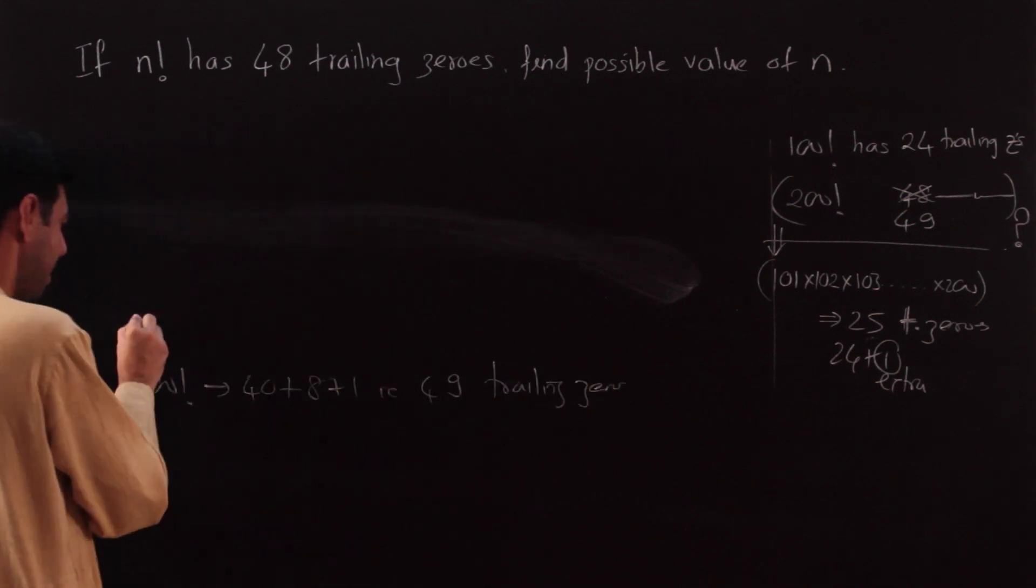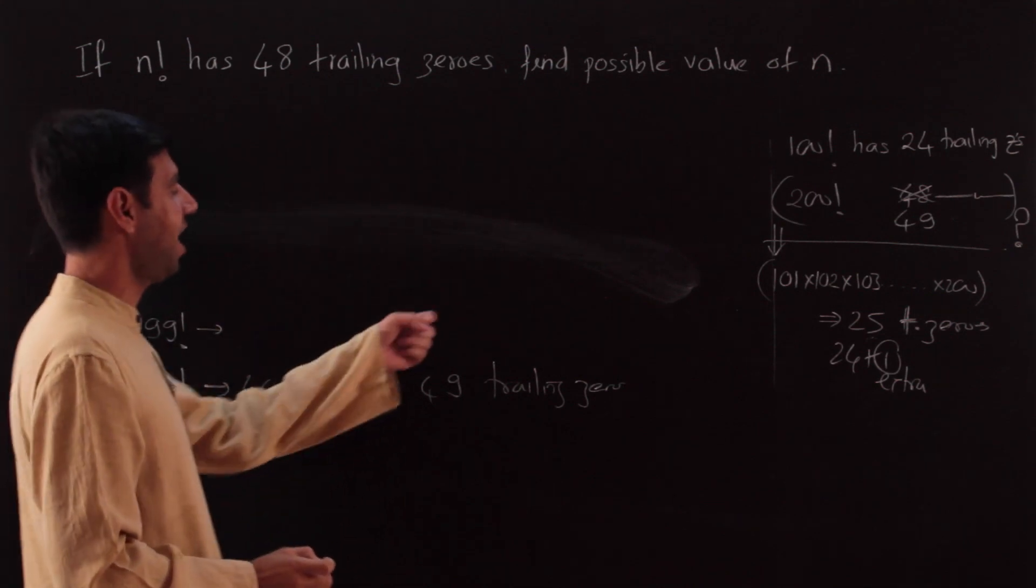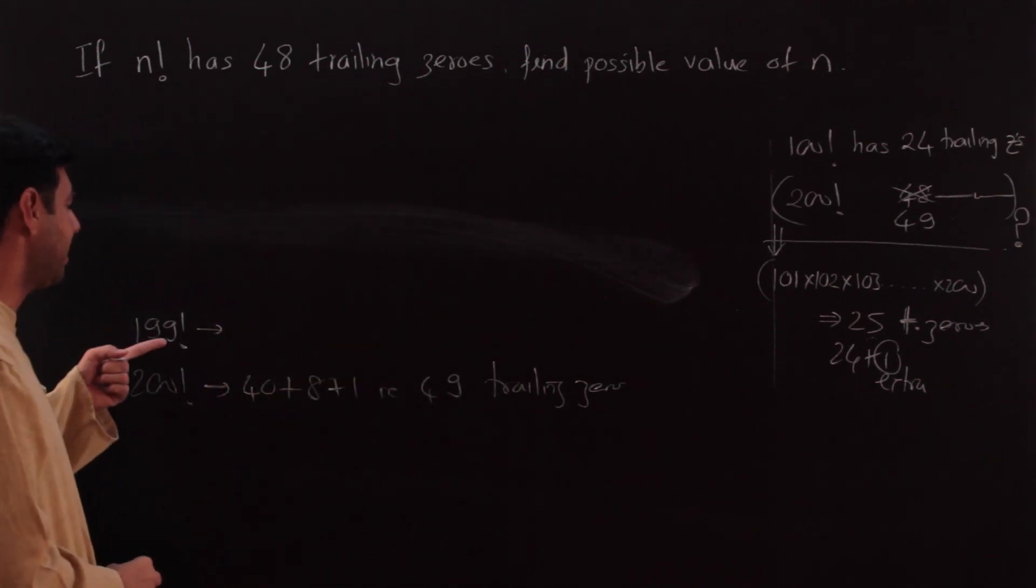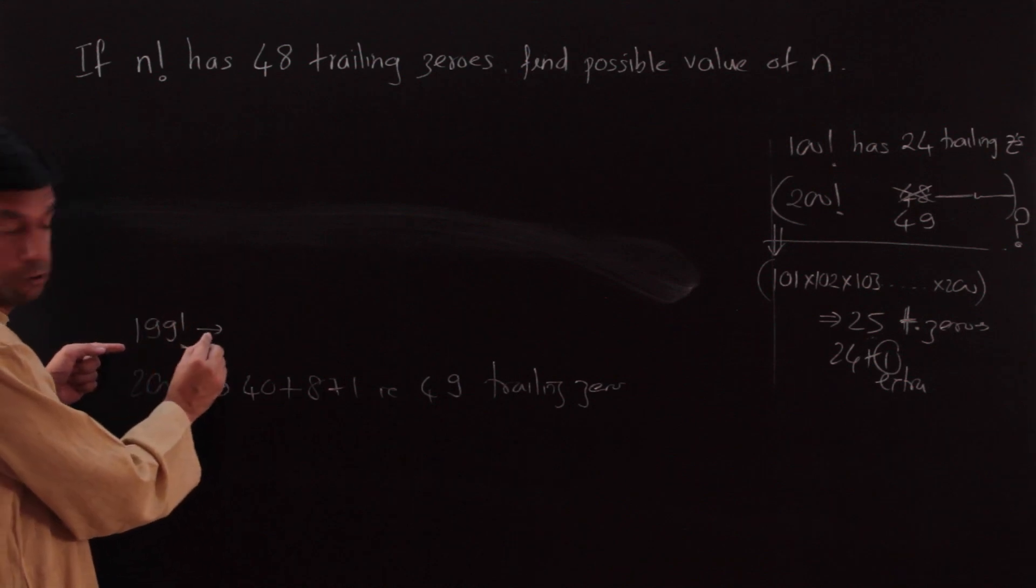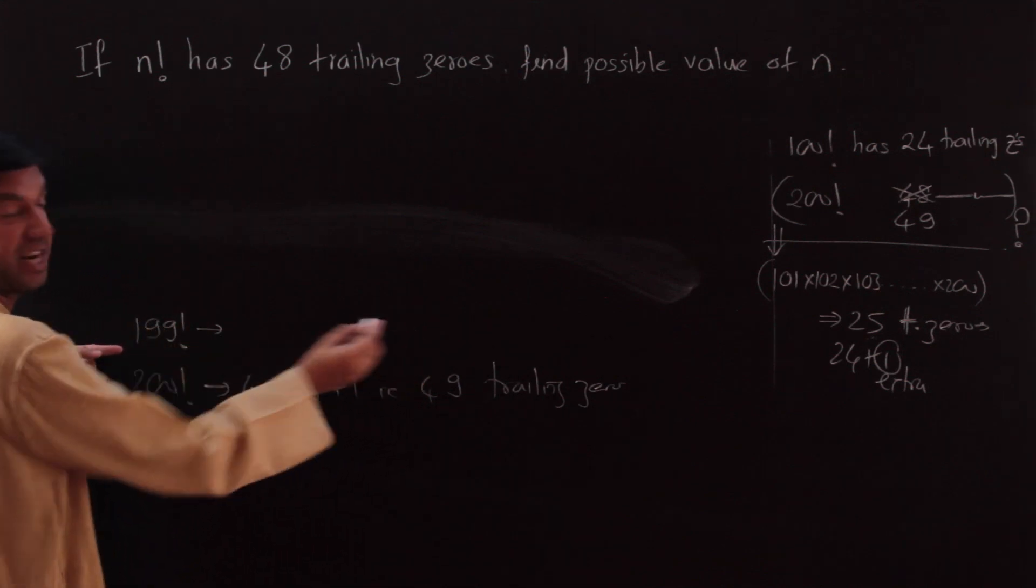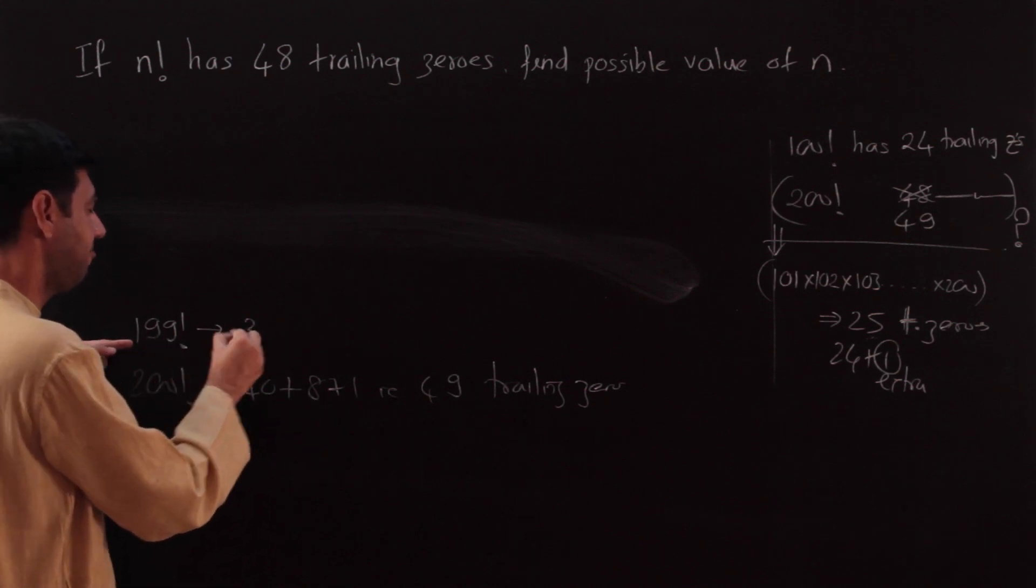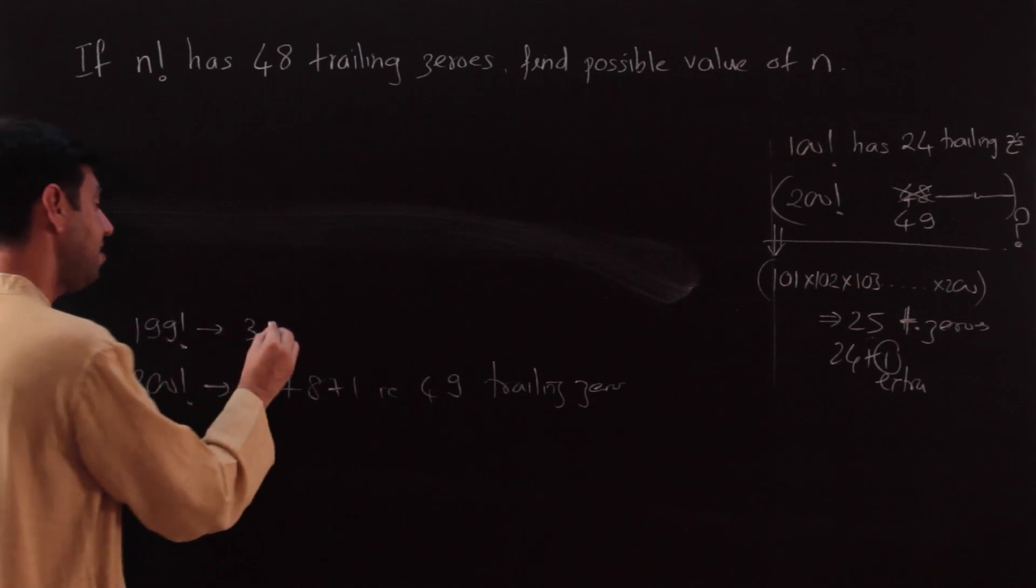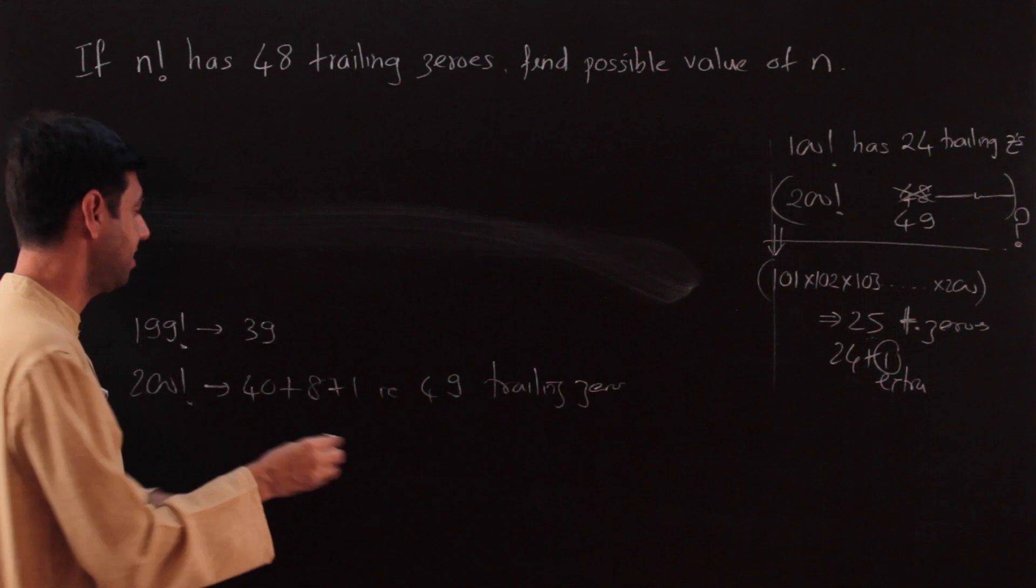Let's continue. 199 factorial - would this have 48 zeros? Let's see. 199 by 5 - do the process on your own. You should be faster than me, or pause and find the number of trailing zeros. Let me do it here.